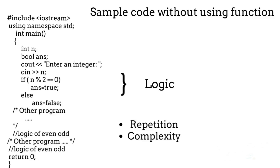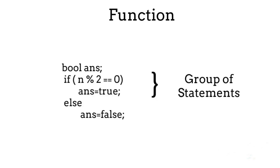If you look at that code, we are repeating a lot of lines of code, which complicates the program. We can reduce the number of lines of code using a function. In this program we are setting a boolean variable called answer to true if the number is even, or to false if the number is odd. A function is a group of statements that will execute only when we call it.